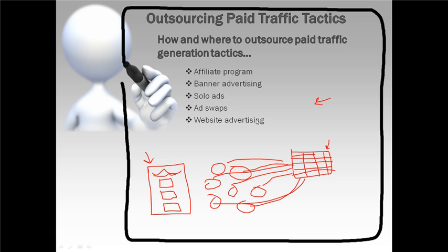For website advertising, have them create a spreadsheet of all websites in your niche where you can advertise. Have them contact sites even if they don't have an obvious 'advertise here' link, then send you the spreadsheet with pricing and details. A little tip: when showing outsourcers how to do these traffic tactics, do a screencast video. Go to Jing.com — that's J-I-N-G.com — and you can record screen videos to show them exactly what you want them to do.